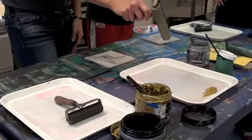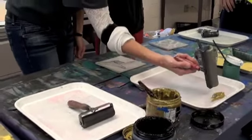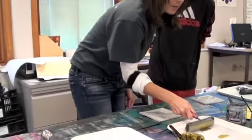You're going to take the brayer. The ink is always at the top. Touch the brayer, get a little bit of ink, and we're going to roll back and forth.